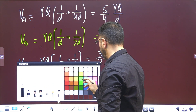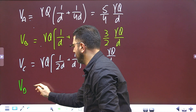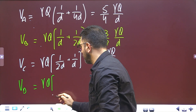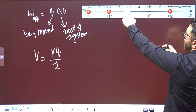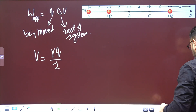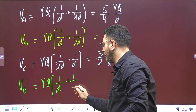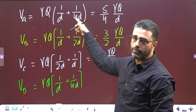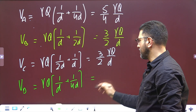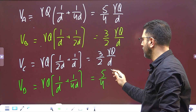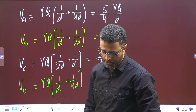Potential at D: taking γQ common, one charge is at distance D and the other is at distance 4D. So V_D = γQ·(1/D + 1/4D) = 5/4 · γQ/D — which is the same as V_A. We did this in question number 7 in the previous session. So now we have the potential at all four points of concern.